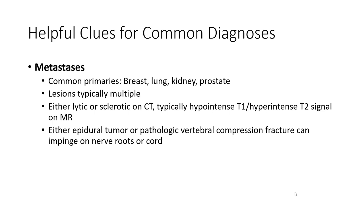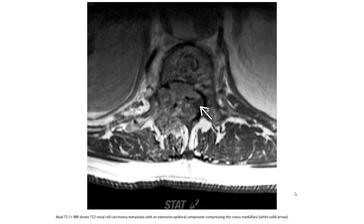Metastases: common primary tumors include breast, lung, kidney, and prostate. Lesions are typically multiple, either lytic or sclerotic on CT, with hypointense T1 and hypointense T2 signal on MRI. Either epidural tumor or pathologic vertebral compression fracture can impinge on nerve root or cord. Axial T1 post-contrast MRI shows a T12 renal cell carcinoma metastasis with an extensive epidural component compressing the conus medullaris, indicated by the white solid arrow.